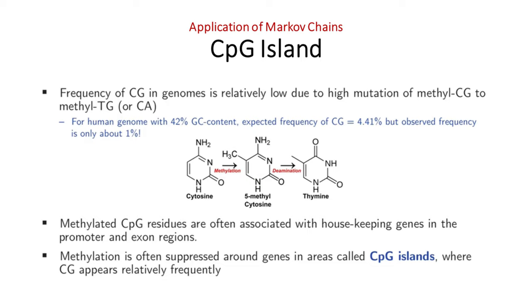If 21% is the expected frequency of bases G and C, then the expected frequency of the CG dinucleotide should be about 4.41%, but in reality we observe only about 1%. The reason for this lower observed frequency is that cytosine is naturally chemically methylated to methyl-cytosine, and methyl-cytosine is easily deaminated and converted into thymine. This C-to-T conversion occurs naturally in DNA, resulting in a much lower observed frequency of CG than expected. The methylated CpG residues are often associated with gene regulation at promoter and exon regions.